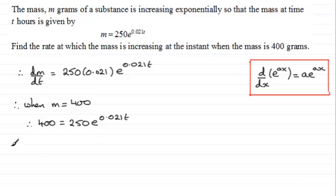So I can say that when m equals 400, we get this equation. I therefore have dm by dt is going to equal, instead of the 250 e to the power 0.021t, I can just write 400.